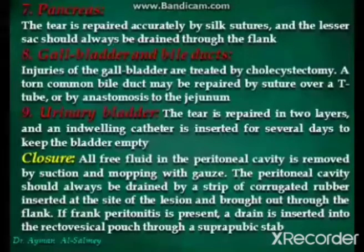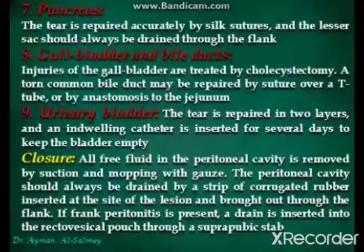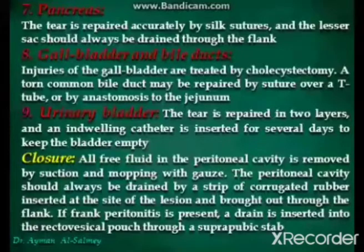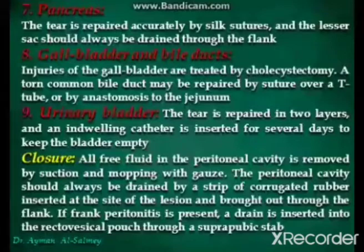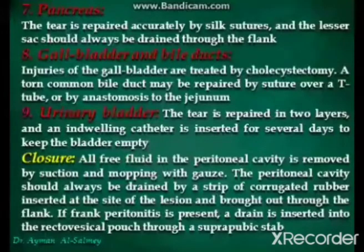For pancreatic injuries, the tear is repaired accurately by silk sutures and the lesser sac should always be drained through the flank. For gallbladder and bile duct injuries, gallbladder injuries are treated by cholecystectomy. A torn common bile duct may be repaired by suture over a T-tube or by anastomosis. For urinary bladder injuries, the tear is repaired in two layers and an indwelling Foley catheter is inserted for several days to keep the bladder empty.